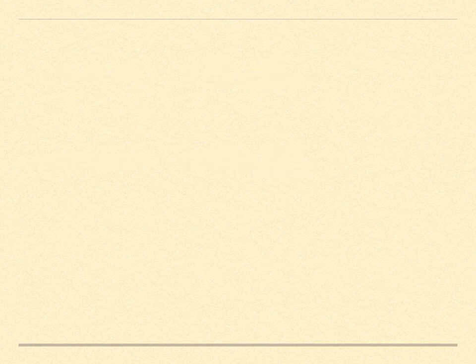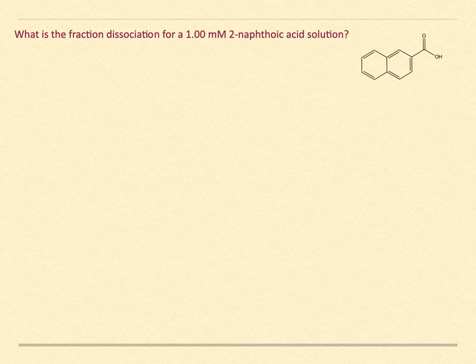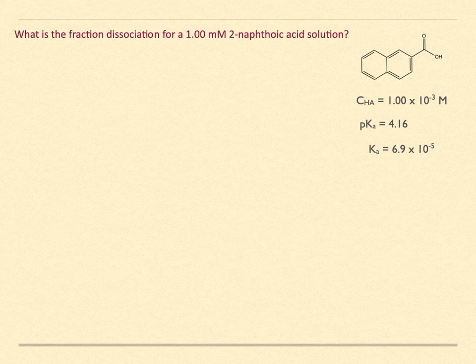What is the fraction dissociation for a 1 millimolar 2-naphthoic acid solution? We look up the pKa for the acid and find it is 4.16, which corresponds to a Ka of 6.9 times 10 to the minus 5.